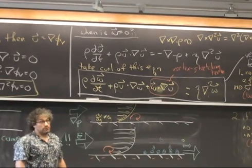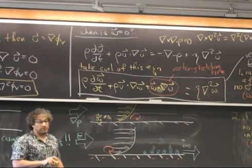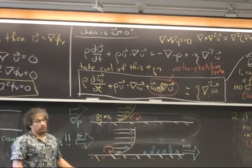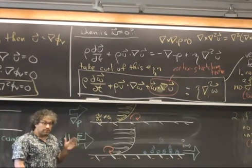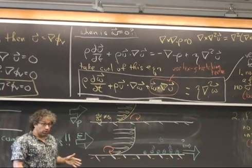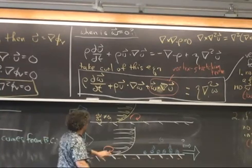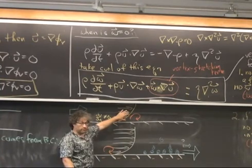So let me paraphrase your question and tell me if I'm on the right track. One part of your question is, is the magnitude of the vorticity at the wall higher or lower in this flow relative to this flow?